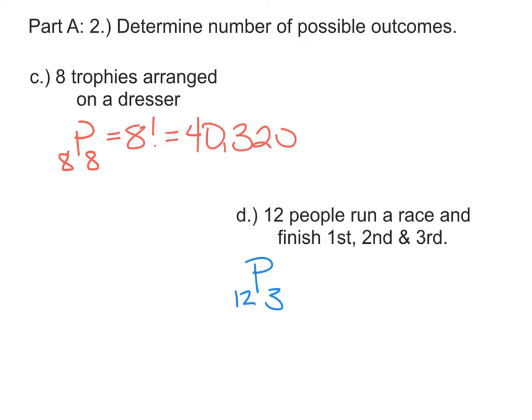We'll find the number of permutations of 12 things, taken 3 at a time. That's going to be 12 factorial over 12 minus 3, or 9 factorial. And that will be 1,320 different finishing orders.